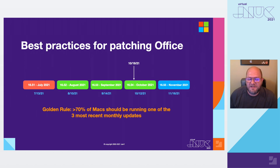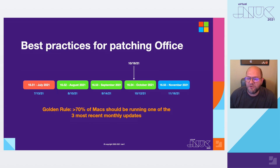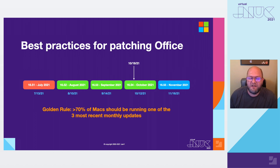The golden rule I tell all of my customers is that 70% or more of your Macs should be running one of the three most recent monthly updates. Today, 16.54 is in the current channel, released just a week ago. So one of the three most recent updates would be 16.54, 53, or 52. If 70% of your devices are running one of those three, then from my perspective you are healthy and keeping up to date with updates. If you're on 16.51 or earlier, you're starting to drag behind a little bit.